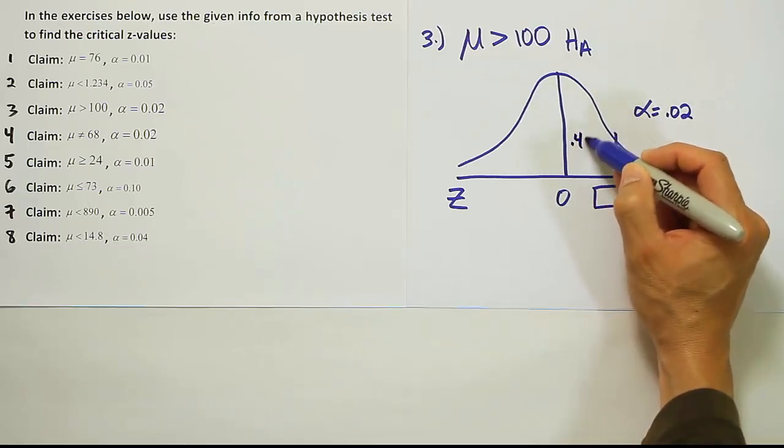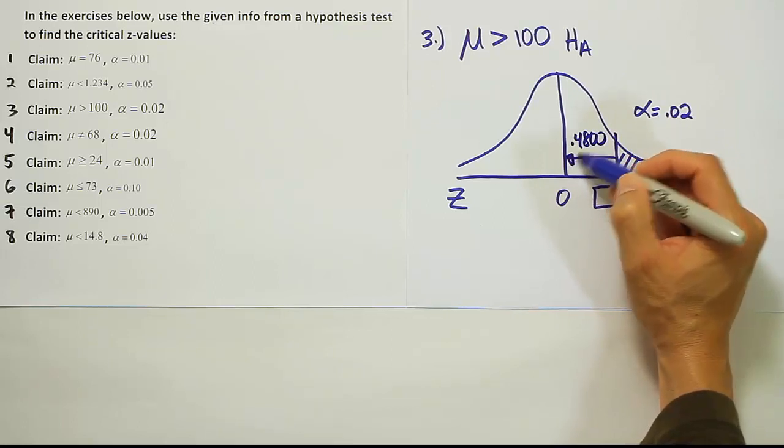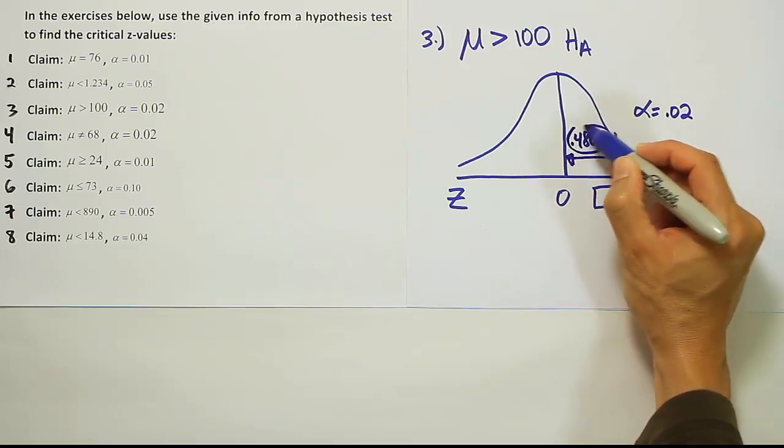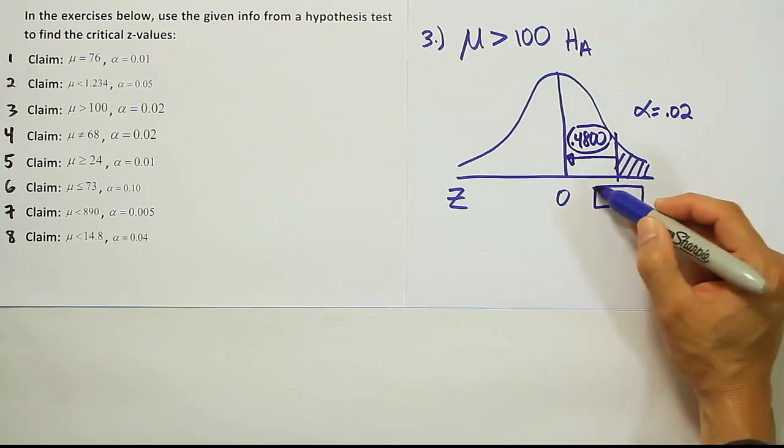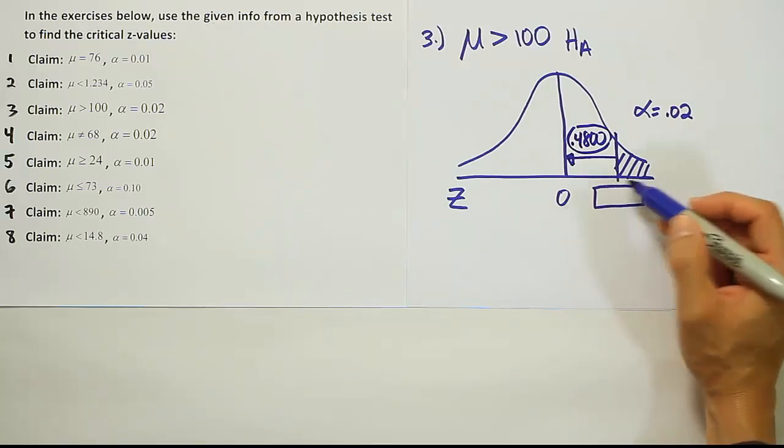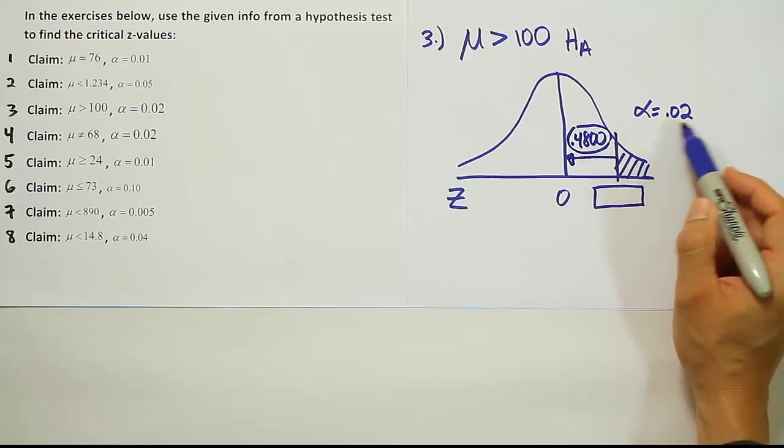That's not so bad. Half the curve is 50 percent, so we know the area from here to here would be 0.4800. If that's the case, it would be that 0.4800 that we have to look up because it's that 0.4800 that's associated with the z-score located at this position on the curve.